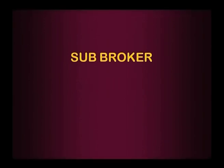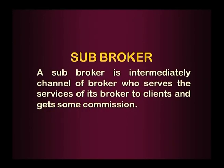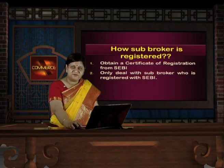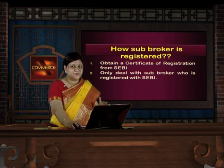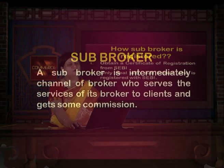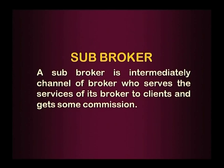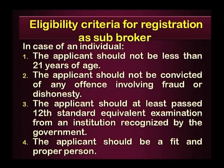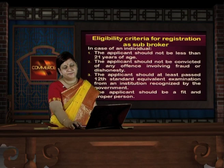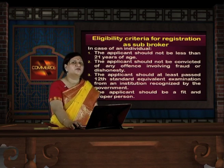Now come to the next topic — subbroker. A subbroker is an intermediary channel of brokers who serves the broker's services to clients and gets some commission. For registration, a subbroker obtains a certificate of registration from SEBI. The eligibility criteria for registration as subbroker: in the case of an individual, he should have attained the age of 21 years; the applicant should not be convicted of any offense involving fraud or dishonesty; the applicant should be at least 12th standard passed from a government-recognized institution; and the applicant should be a fit and proper person.